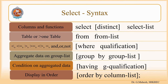Now let us see the full syntax of the SELECT command: SELECT DISTINCT SELECTION LIST FROM FROM LIST WHERE QUALIFICATION GROUP BY GROUP LIST HAVING G-QUALIFICATION ORDER BY. SELECTION LIST selects columns, FROM LIST selects tables, WHERE clause filters rows by condition, GROUP BY groups rows based on specified columns, HAVING applies conditions on aggregated data, and ORDER BY displays data in an ordered manner.